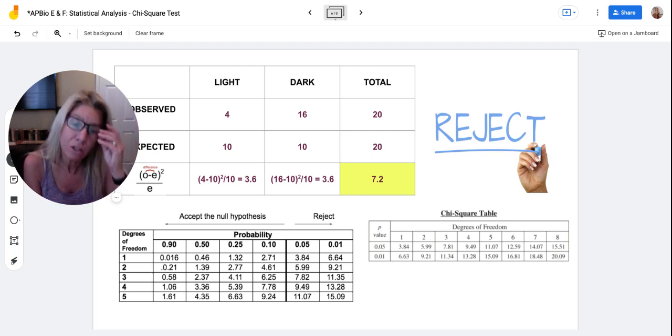So they just gave you the reject numbers. If your number is smaller than the numbers you see here, then you're going to accept it. But if it's a larger number like these, then you're going to reject it.